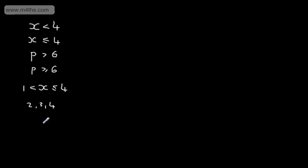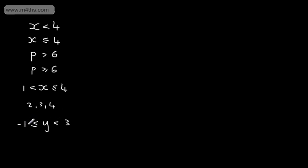Let's look at another example. We might have y is going to be greater than or equal to minus 1 and in turn y is going to be strictly less than 3. We might be asked to state two integer values — two whole numbers — that satisfy this inequality. We could, for example, have minus 1 and 1. We're just looking for numbers in between. So there's some basic notation and terminology.